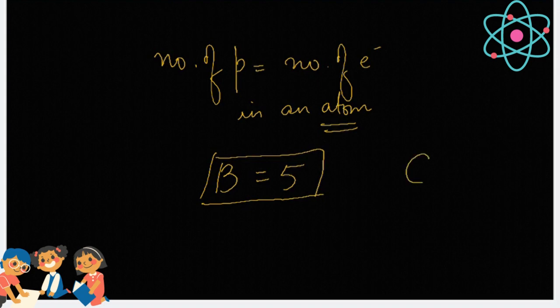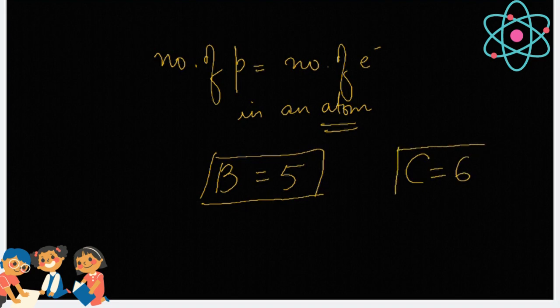Similarly, if I have another example, carbon: the number of protons present in carbon is 6, or say the number of electrons present in carbon is 6. So, you will say the atomic number for carbon atom is also 6.